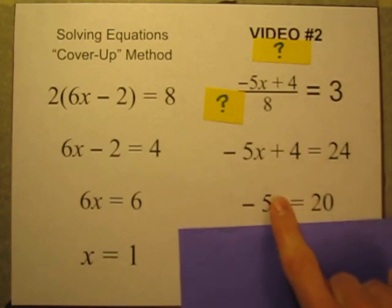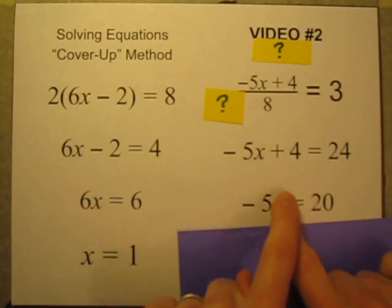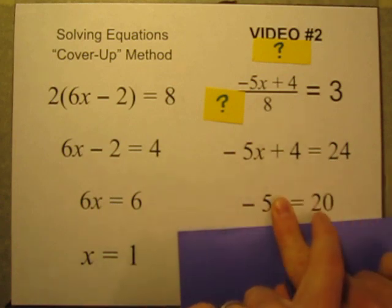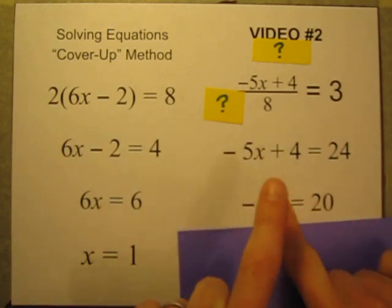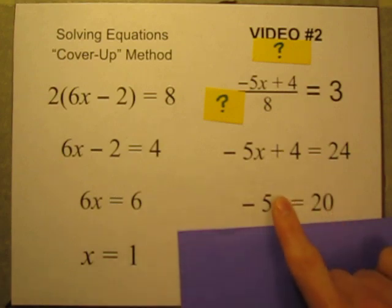And lastly, negative five times what equals twenty? Well, a negative times a negative makes a positive. So negative five times negative four makes positive twenty. So this x must be a negative four.